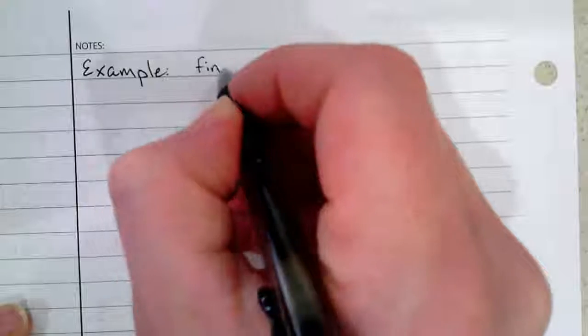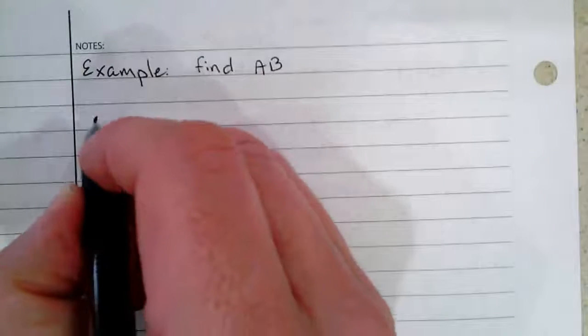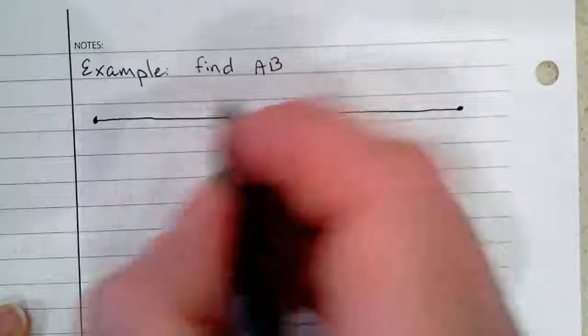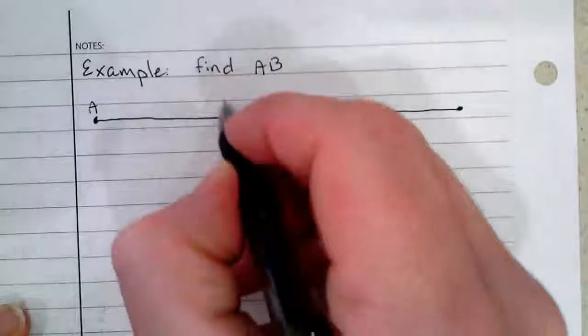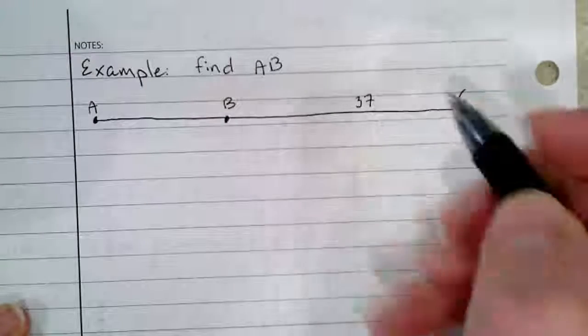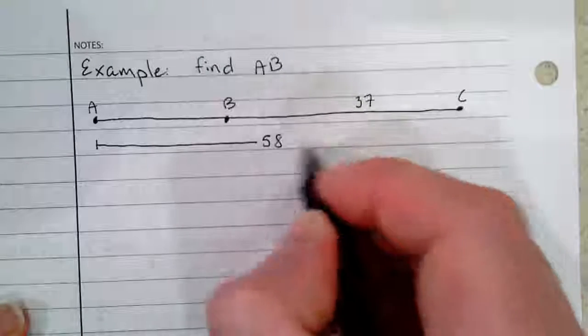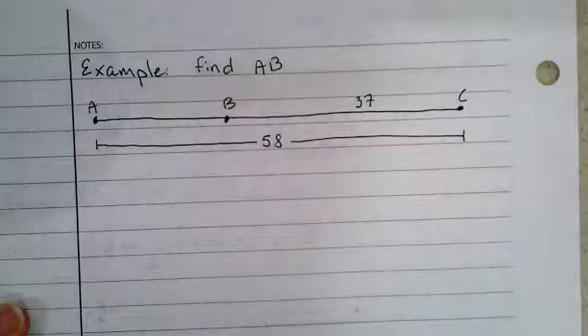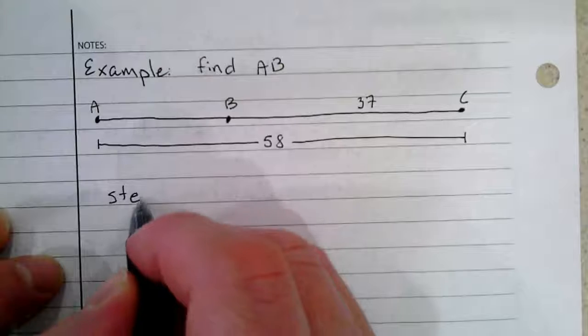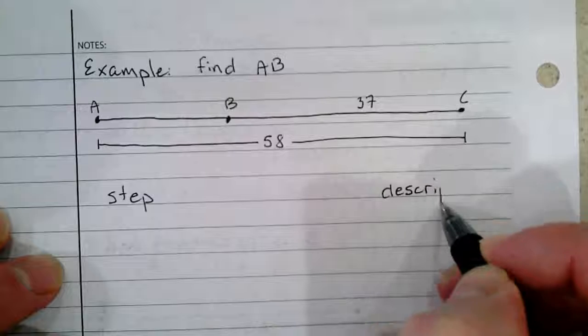Example two: we're going to find AB this time. Here's our diagram. I'll put B a little closer to this side this time for no real reason. And we have 37, entire length is 58. So we've got steps and description.